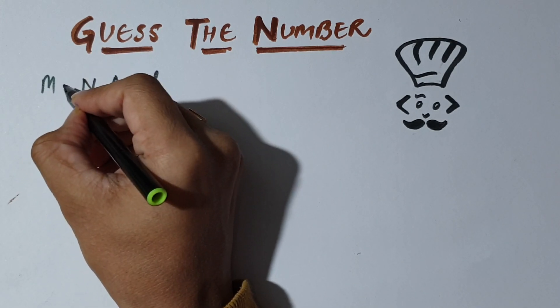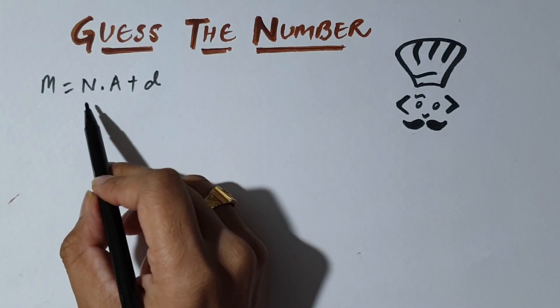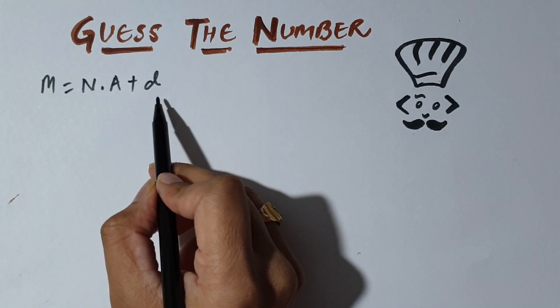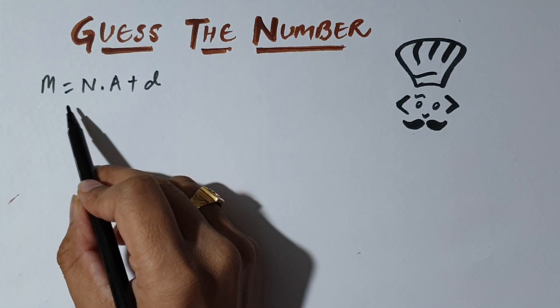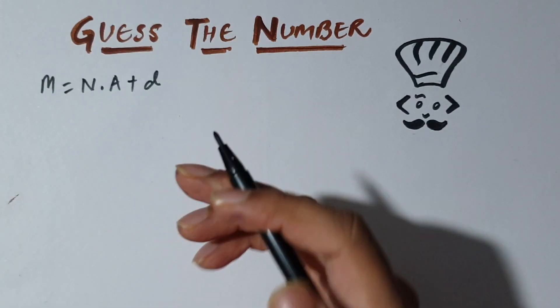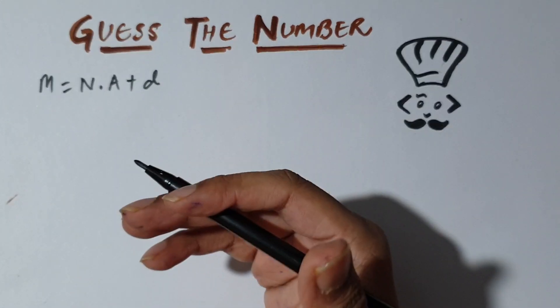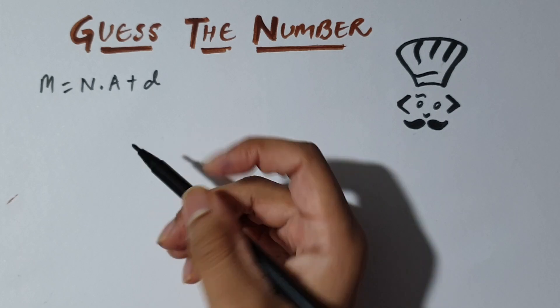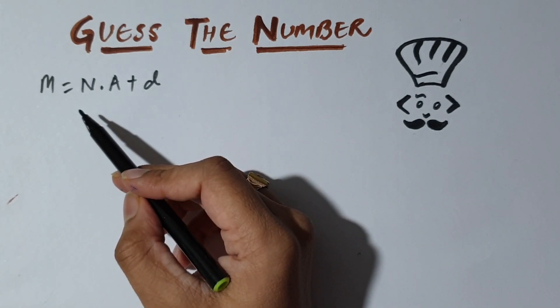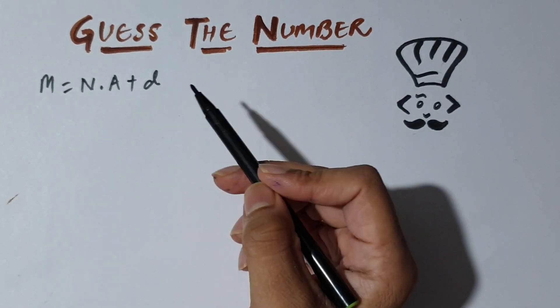So let's denote this by M. And Chefu tells this number back to Chef. Now Chef's task or our task is to tell all the possible values of N that Chefu could have chosen initially.